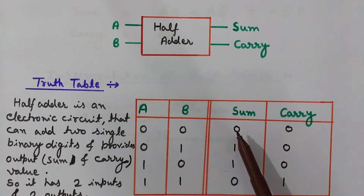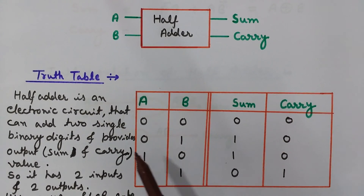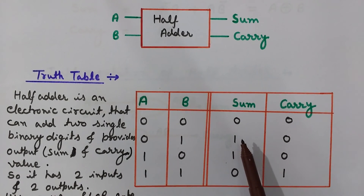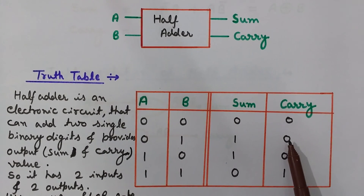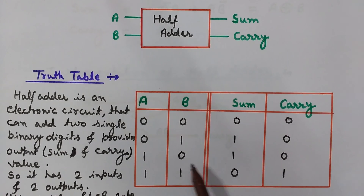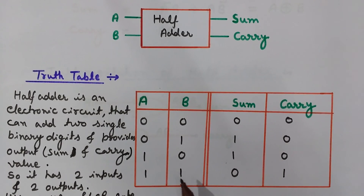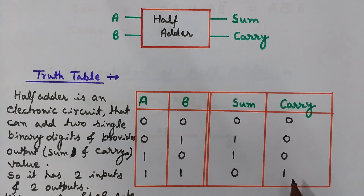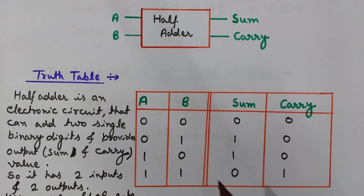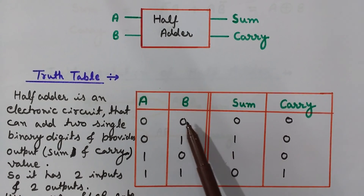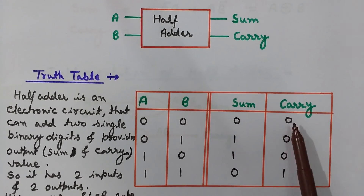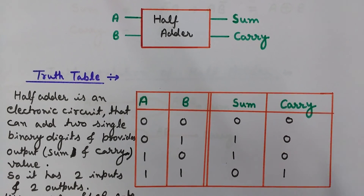If we add the inputs: 0+0 gives sum 0 with no carry; 0+1 gives sum 1 with carry 0; 1+0 gives sum 1 with carry 0; and 1+1 gives sum 0 with a carry of 1 — unlike normal mathematics — because in digital electronics we work in binary.